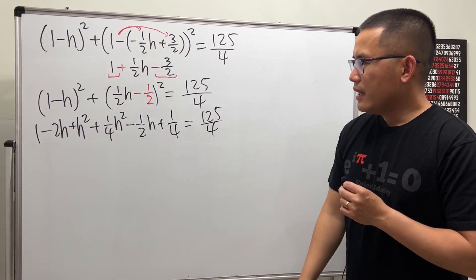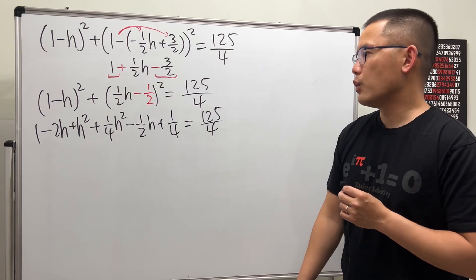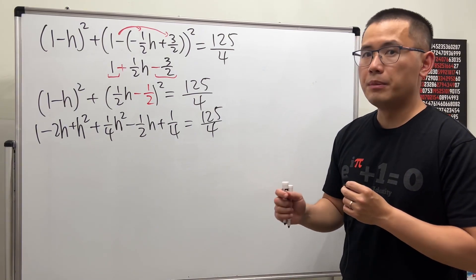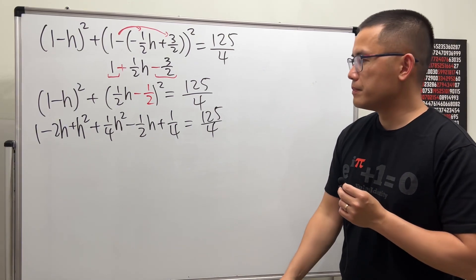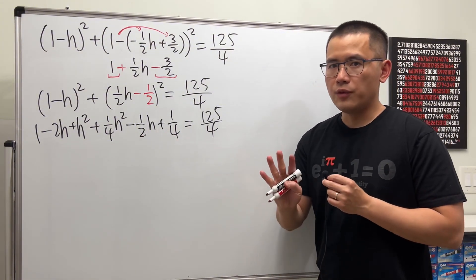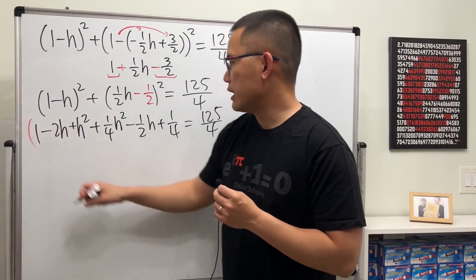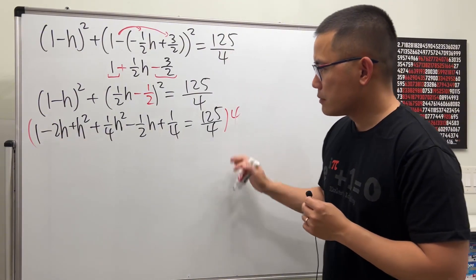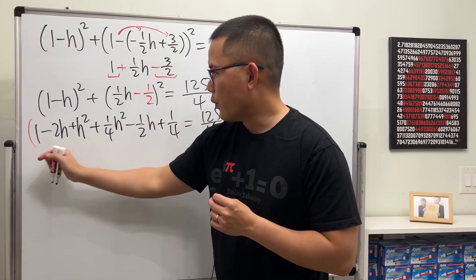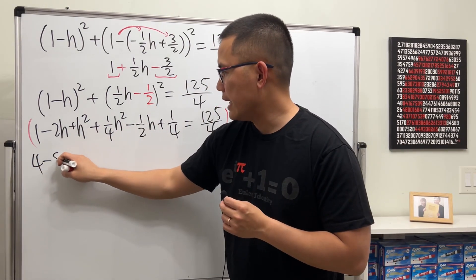Now you might be thinking — wow, that's a lot of fractions. What you can do is multiply everybody by the lowest common denominator. We have 2 and 4, so the LCD is 4. Let's multiply everybody by 4 and distribute: 1 times 4 is 4, minus 4 times 2 is 8.